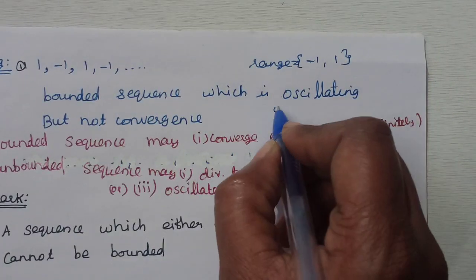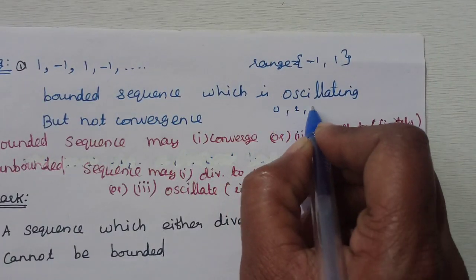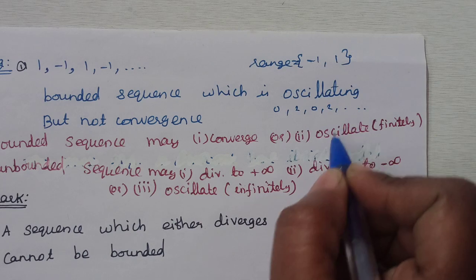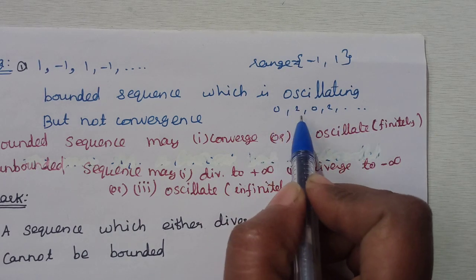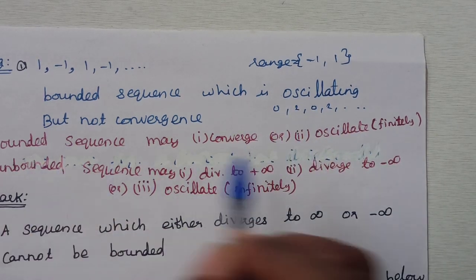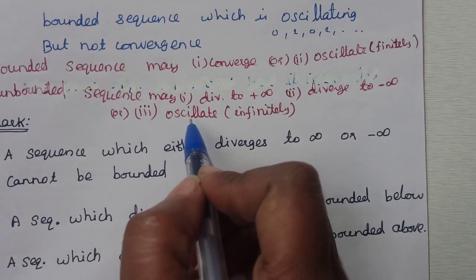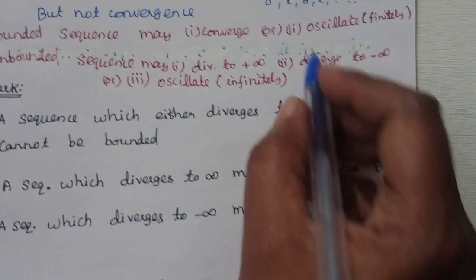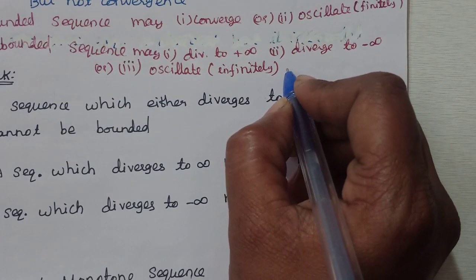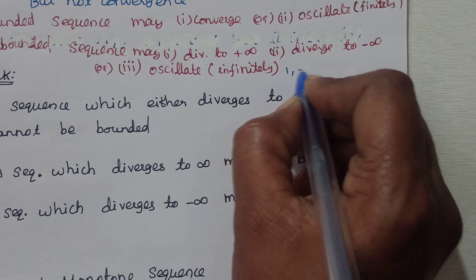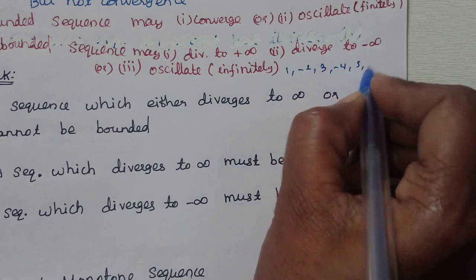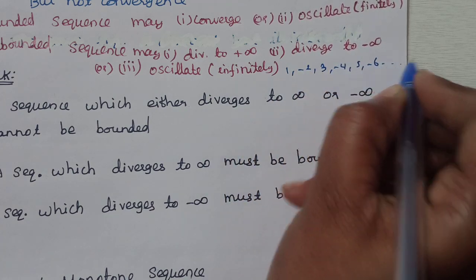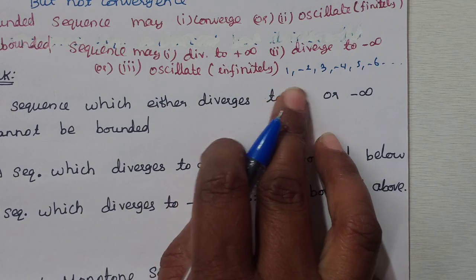For example, 0, 2, 0, 2, ... is an oscillating sequence bounded between 0 and 2, oscillating finitely. Whereas the sequence 1, -2, 3, -4, 5, -6, ... oscillates infinitely and is unbounded.